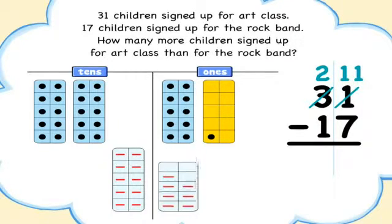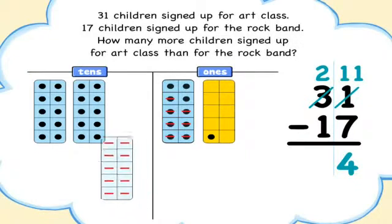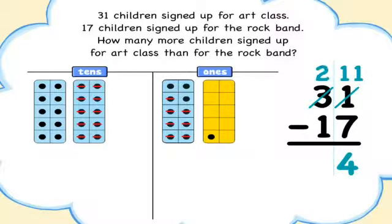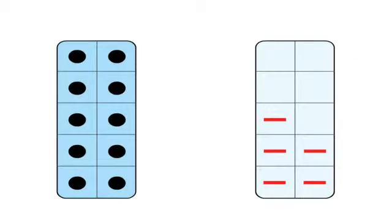11 take away 7 is 4. Then subtract the tens. 2 tens take away 1 ten leaves 1 ten. The difference is 14.